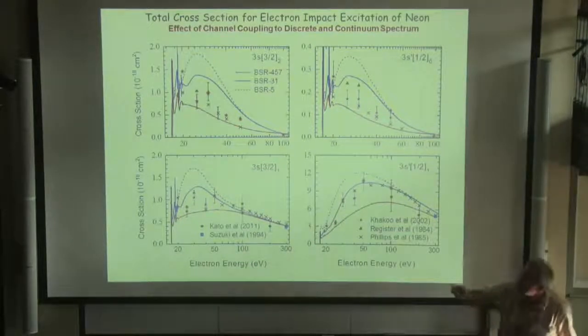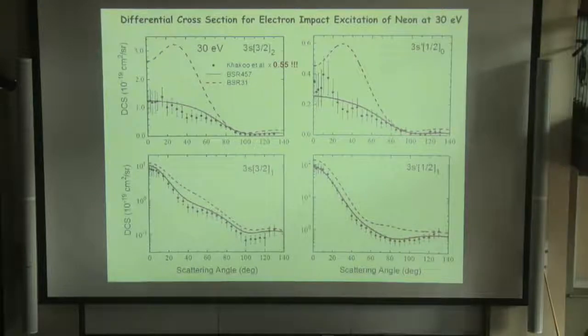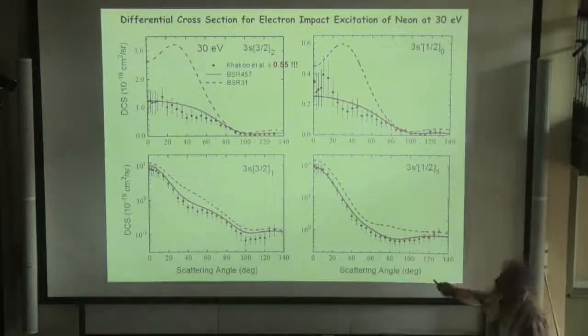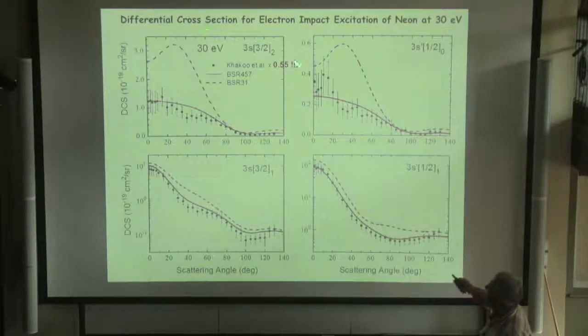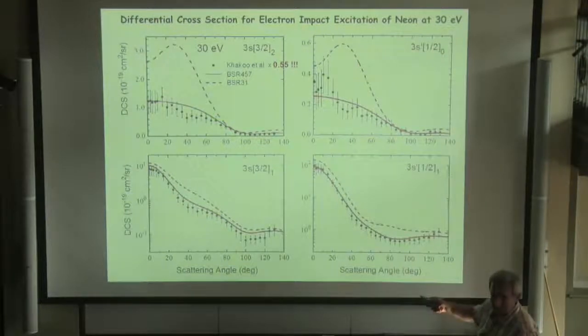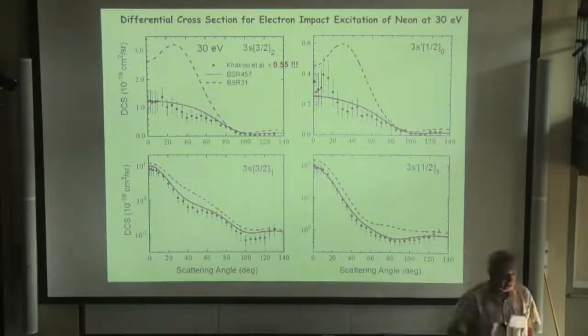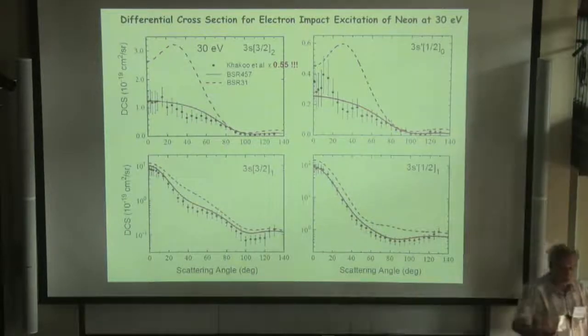But in support of our results, we solved the long-standing problem for, for example, for the differential cross-sections. Because before, we cannot describe the shape for the differential cross-sections for excitation of the metastable states. Now, with inclusion of target continuum, we obtain rather good agreement in the shape for the differential cross-section. So I believe our results for neon are close to the convergence here.